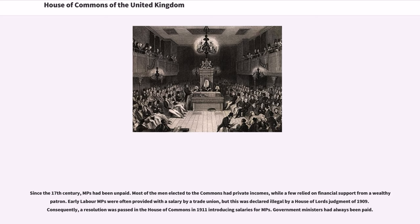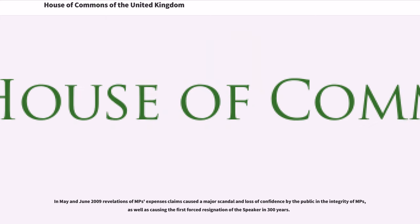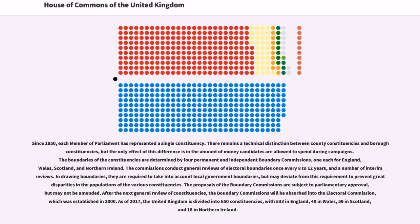In May and June 2009, revelations of MPs' expenses claims caused a major scandal and loss of confidence by the public in the integrity of MPs, as well as causing the first forced resignation of the Speaker in 300 years. Since 1950, each member of Parliament has represented a single constituency.